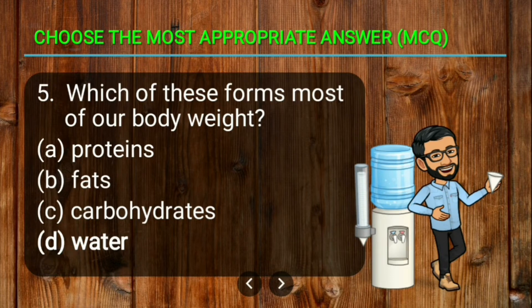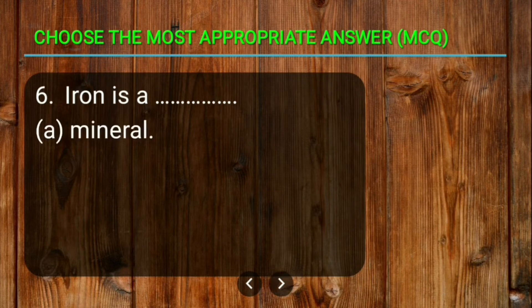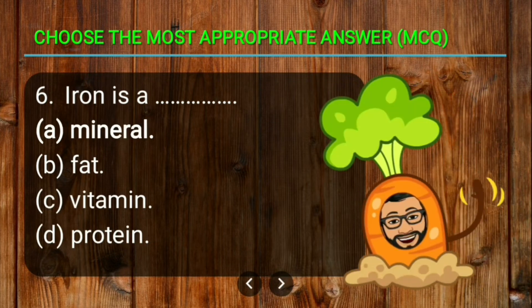Question number six: iron is a blank. The options are mineral, fat, vitamin, and protein. The correct answer is mineral. Iron is a kind of mineral.